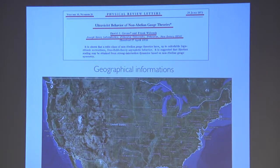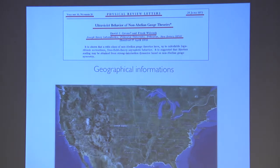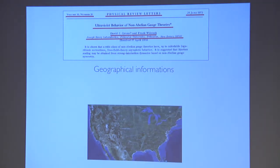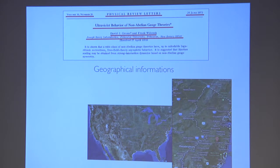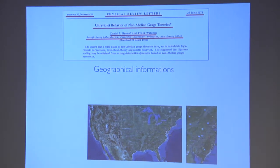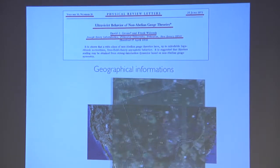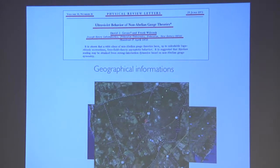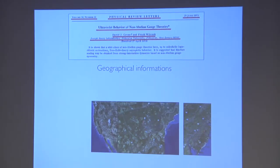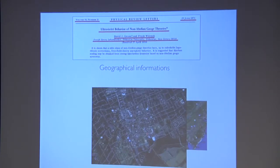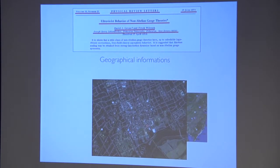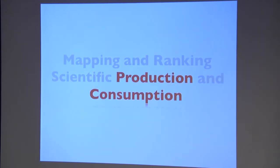We take all the papers in our publication database and map them at different geographical resolutions. For example, this paper — though it's not explicitly written there — you can assume it was written in the US, then in New Jersey, Princeton as a city, and then you can drill down to the laboratory and the actual affiliation of the authors.